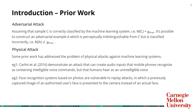When it comes to adversarial attack, assuming there is an example C which can be correctly classified by the machine learning system — in this paper, an Inception model — it is possible to construct an adversarial example A which is perceptually indistinguishable from C, meaning humans cannot distinguish A from C, and this example A will be classified incorrectly.